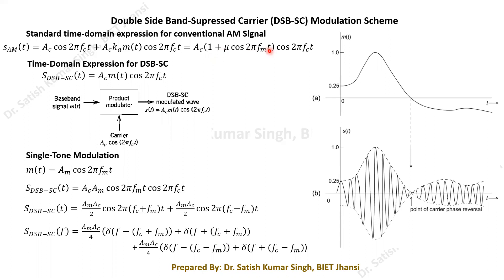In DSBSC, as the name suggests, we have both an upper sideband and a lower sideband — just like conventional AM, which is also called Double Sideband Large Carrier (DSBLC). In conventional AM, we send a large carrier along with the two sidebands. From the equation, one term gives the two sidebands and the other term is the large carrier.